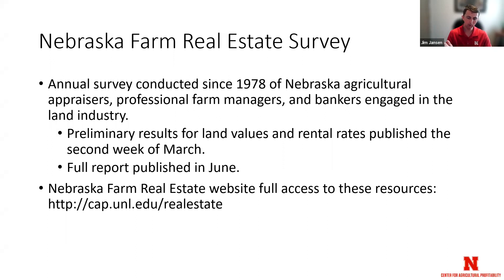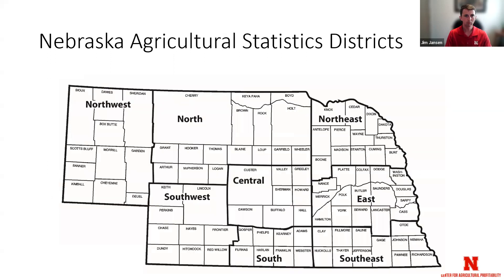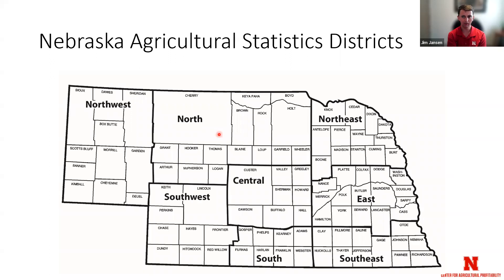For the real estate information, go to cap.unl.edu/realestate. That's where you can find the current report and all archived reports. Each year, we take the 93 counties in this state and subdivide them into eight agricultural statistic districts — regions that share similar production attributes. For those aware of the term 'crop reporting district,' that is the same region. These regions share similar expectations for rainfall, crop yield, and soil type.